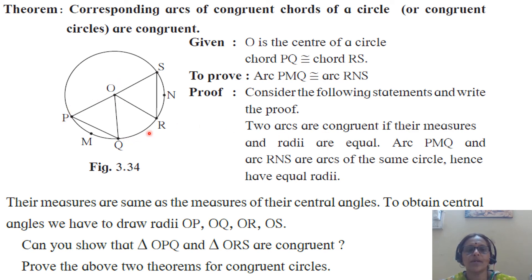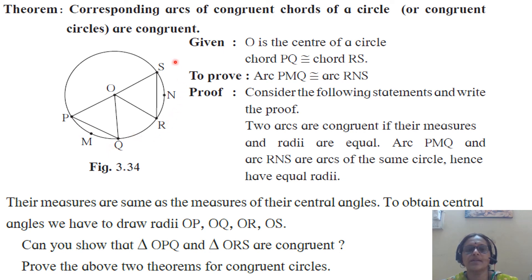Consider triangle POQ and triangle ROS. PO is congruent to OR — radii of the same circle. OQ is congruent to OS — radii of the same circle. Chord PQ is congruent to chord RS — given. So, two triangles are congruent by the SSS test, and therefore corresponding angles are also congruent. That is, angle POQ is congruent to angle ROS. Since this is the central angle, the corresponding arc PMQ is congruent to arc RNS. It is proved that arc PMQ is congruent to arc RNS.